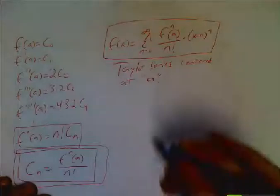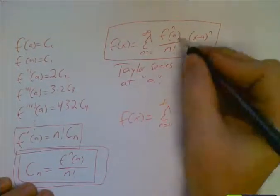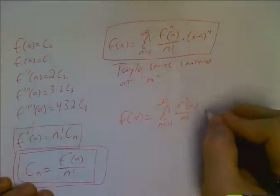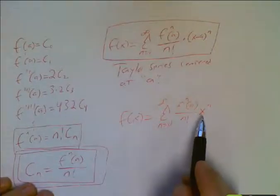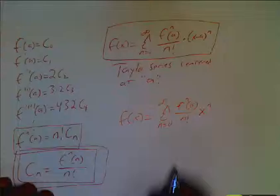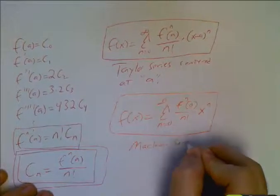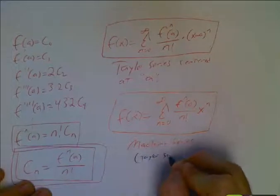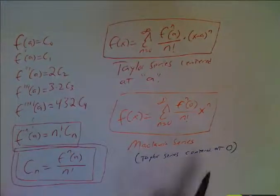if I do the exact same thing but center it at zero, like purposefully put the center at zero, the series starts to look like this instead. Instead of x minus a, I'm just writing x to the n. And instead of f to the nth derivative of f at a, I put f to the nth derivative of zero. This has a special name too, and this is called the Maclaurin series. The Maclaurin series is simply, in other words, it's a Taylor series centered at zero.